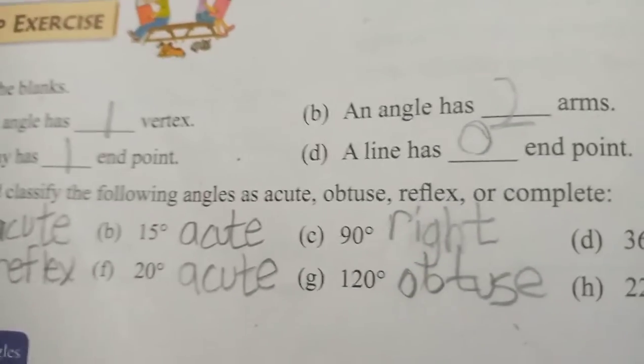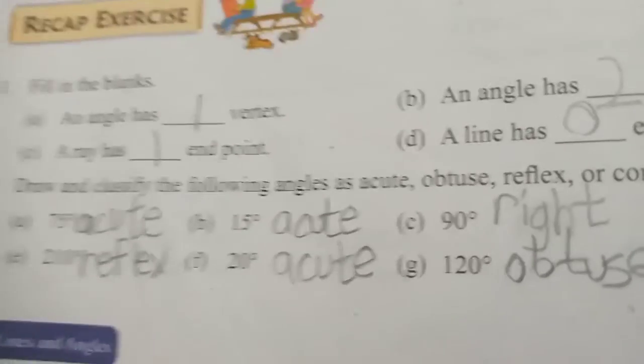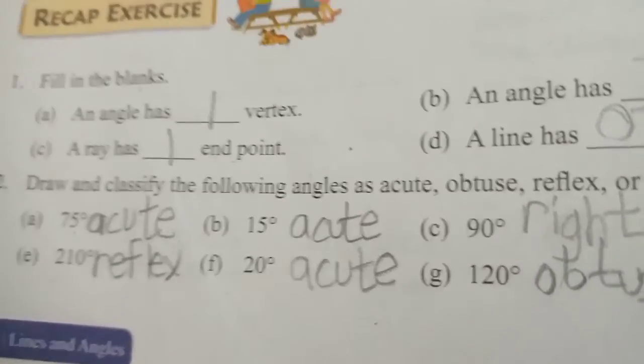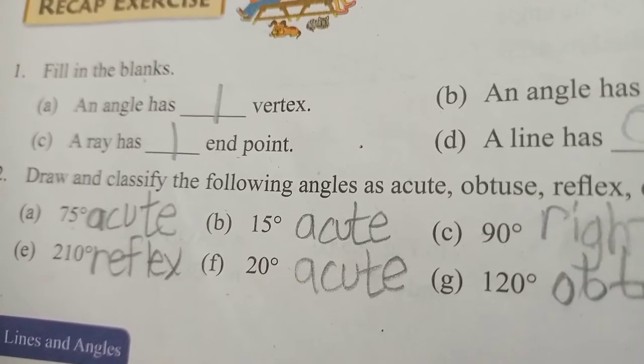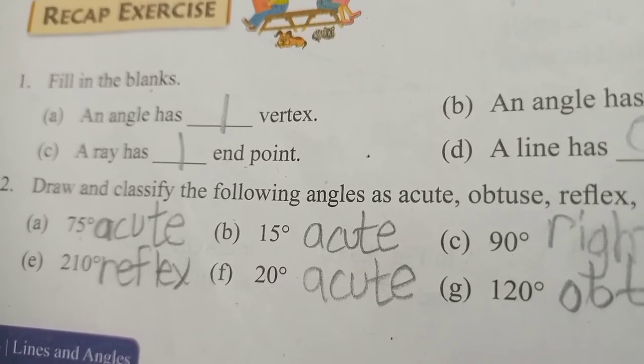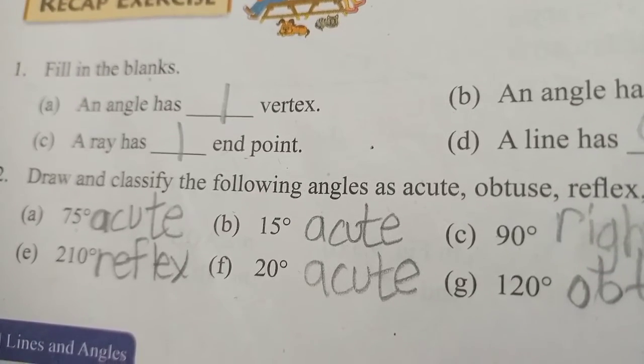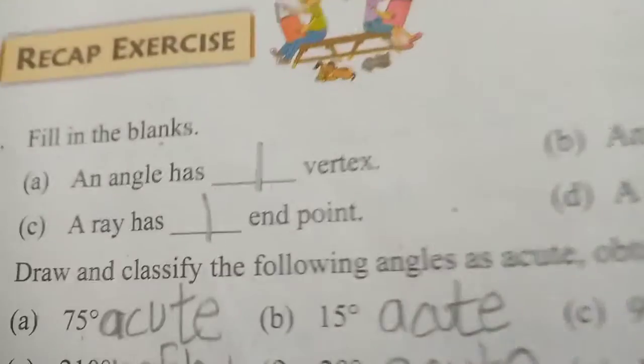Number two: draw and classify the following angles as acute, obtuse, reflex, or complete. They give different measured angles and we need to classify them. You can draw them yourself, which is very easy. So let's do it.